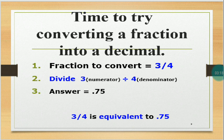Let's have the time to try converting a fraction into a decimal. Number one, fraction to convert is three-fourths. Divide three, which is the numerator, divided by four, which is our denominator. Then the answer will be 75 hundredths, or 0.75. Therefore, three-fourths is equivalent to 0.75.